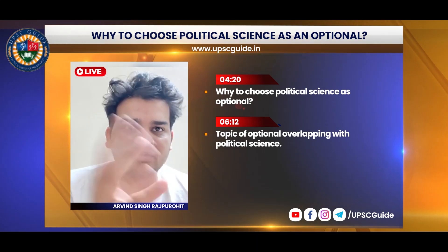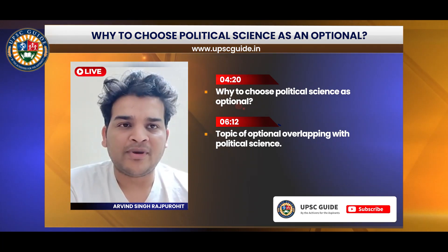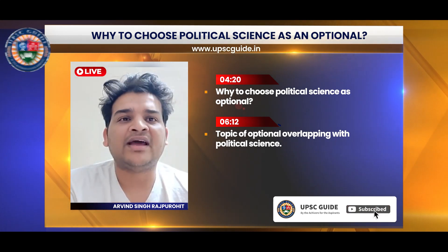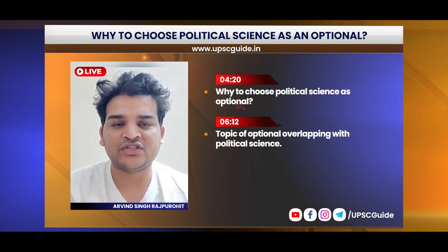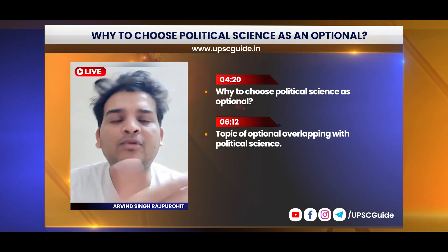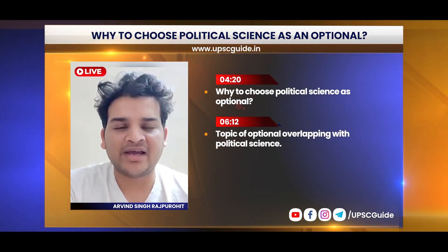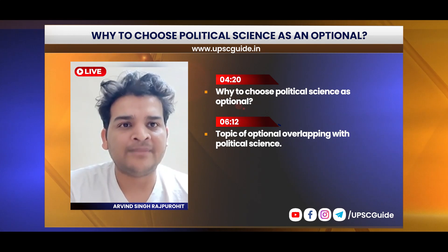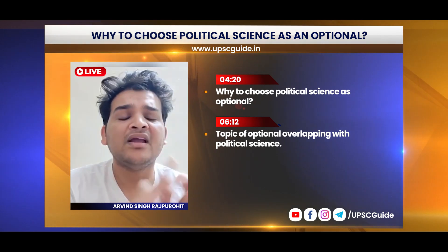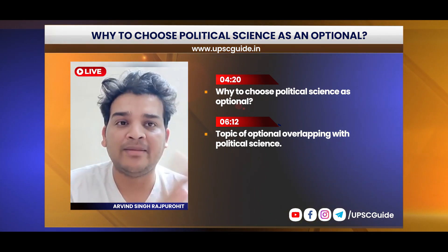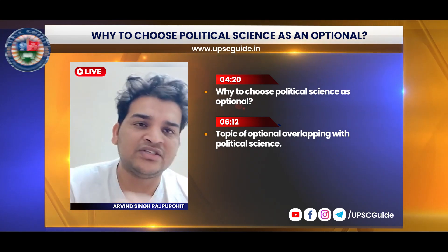In GS2, there are three components: polity, governance, and international relations. Political science and international relations is effectively the name of GS2, so GS2 is wholly overlapped with political science. In GS3, there are economy-related topics - WTO, IMF, World Bank, multilateral trade - all of which overlap. Internal security and external security related topics also match political science.